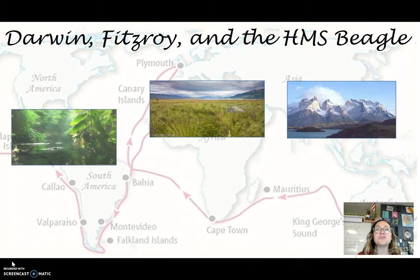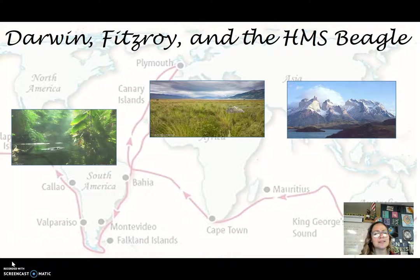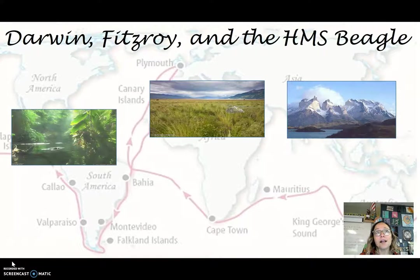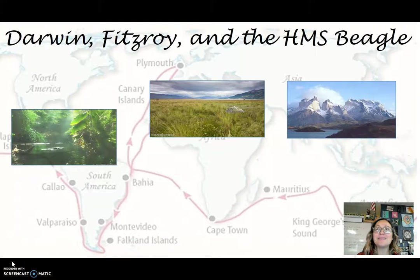Darwin was a little unsure of what he wanted to do in life. He was always interested in nature, but his dad really wanted him to become a doctor. He tried medical school, realized it wasn't for him — a young man in his early 20s, a little unsure. Does he go into ministry? Does he become a doctor against his interests? Then, as luck would have it, a gentleman named Fitzroy, a captain on a ship, was going on a voyage supposed to be about two years to chart the coast of South America on a ship called the HMS Beagle. Fitzroy was looking for a companion of the same social class to have conversations with.